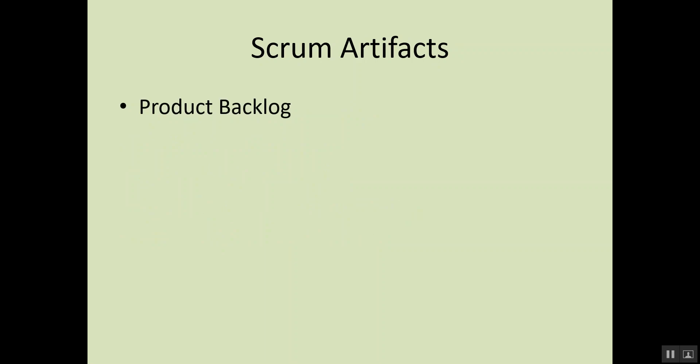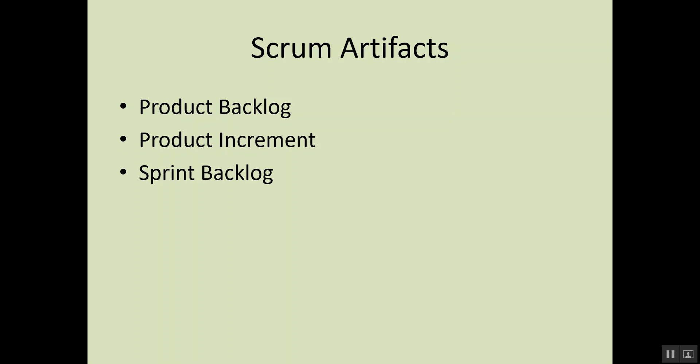Then we move on to Scrum artifacts. The first is the product backlog — responsibilities of the dev team towards it, characteristics of the product backlog item, and elements of the product backlog item. Then the product increment: when we should get a product increment, what product backlog refinement is, and how it affects the product increment. Then the sprint backlog: essential characteristics, how it can be changed, and how responsibility for making changes is divided among team members.